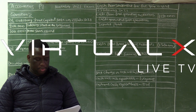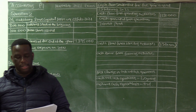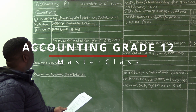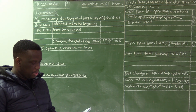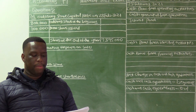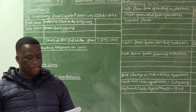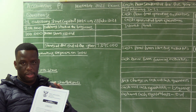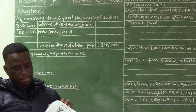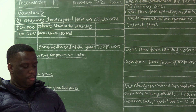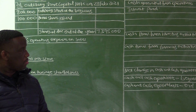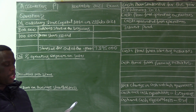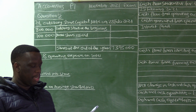Good day everyone, this is Accounting Master Class. We are doing Question 2 taken from the November 2021 exam paper. It is advisable that you take out the paper and we do it together, and your calculator must also be there so that you can confirm the calculations. Question 2 covers share capital, financial indicators, and cash flow statement.